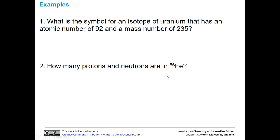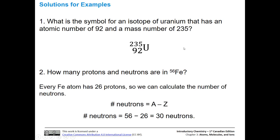Let's practice. What is the symbol for an isotope of uranium with an atomic number of 92 and a mass number of 235? And how many protons and neutrons are in iron-56 (56Fe)? For uranium: the mass number 235 goes in the top spot, the atomic number 92 goes below — that's also the number of protons — and U is the elemental symbol. To find the number of neutrons, take 235 minus 92.